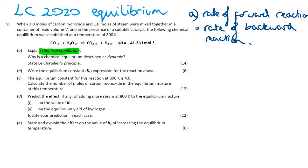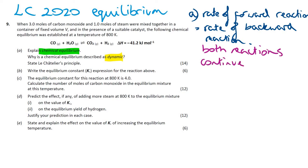Why is a chemical equilibrium described as dynamic? It's dynamic because even though you have a constant concentration of reactants and products, the reactions are continuously occurring — they don't stop. Both reactions continue, i.e. it's not static.